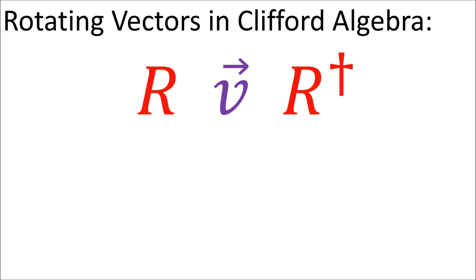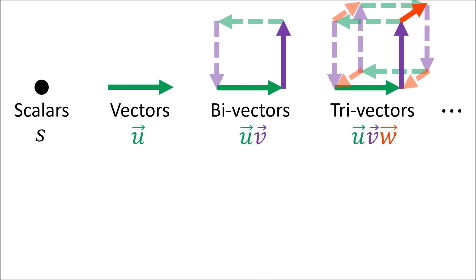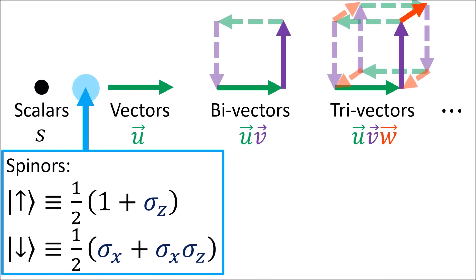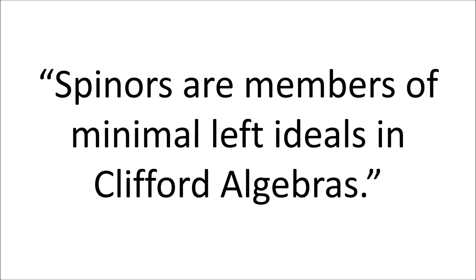In Clifford algebras, vectors are also rotated using double-sided transformations, just as we saw with polyvectors. Spinors also arise naturally in Clifford algebras for free. Here we can see the spin up and spin down states from quantum mechanics represented in a Clifford algebra. We'll see that spinors can be defined as members of minimal left ideals in Clifford algebras. This is a pretty abstract sounding definition, but we'll approach it slowly over several videos, step by step.